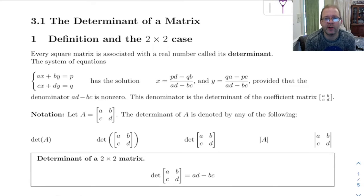Chapter 3.1 is about the determinant of a matrix. In this first part we're going to look at the definition of determinant and the formula for finding the determinant of a 2x2 matrix.